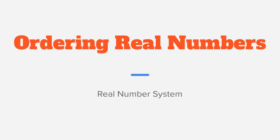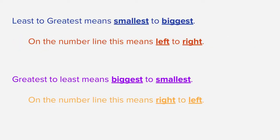Today we're going to be talking about ordering real numbers, so let's get started with a couple of definitions. When we talk about least to greatest, that means we're going from the smallest number to the biggest number — on a number line, we're going from left to right. Greatest to least means going from the biggest number to the smallest number, which on a number line means going from right to left.